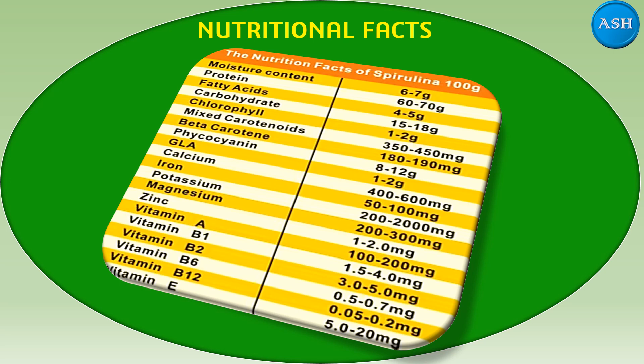Minerals such as calcium, iron, potassium, magnesium, and zinc are also present. Different varieties of vitamins include vitamin A, B1, B2, B6, B12, and E — all present in milligram amounts, so in very trace amounts. All this composition together constitutes 100 grams of Spirulina. Protein is present in the highest quantity, and for this reason, Spirulina is considered one of the best single cell proteins.